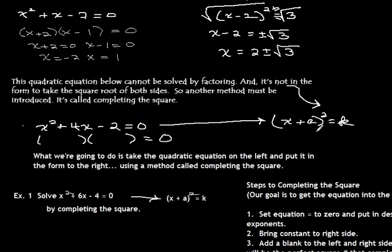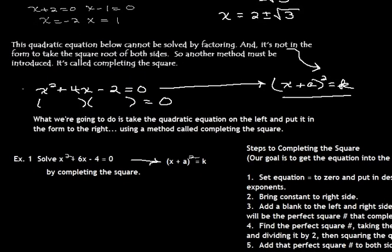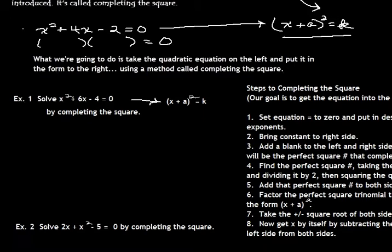Completing the square is just putting it into this form. It's a lot of steps and you're going to have to practice it. Once you get it, it has a slight fun feel to it. Here's our first quadratic equation. It'll tell you the method that you have to use, at least initially, to solve quadratic equations. So even if this is factorable, they want you to do it by completing the square. Our goal is to get it into the form x plus A, quantity squared equals K. On the left-hand side, we're going to make it into a perfect square trinomial.